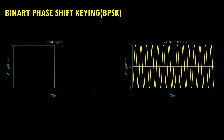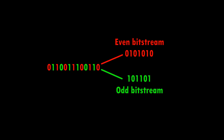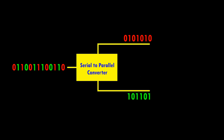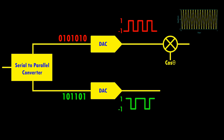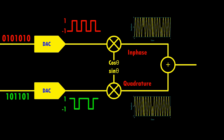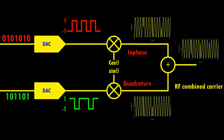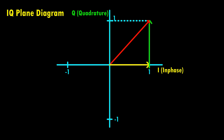We can increase the data rate of the transmitted bit stream using the quadrature or sine component as well. To understand this, let's divide the transmitted digital bit stream into even and odd streams using a serial-to-parallel converter. After this, we transform logic 1 as +1 and logic 0 as −1 using a digital-to-analog converter. We then multiply one bit stream with the cosine RF signal to generate an in-phase signal, and the second bit stream with the sine RF signal to generate a quadrature signal. Both signals are then combined to generate an RF combined carrier.